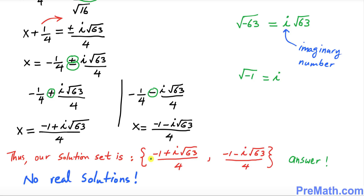So our solution set is: (negative 1 plus i times the square root of 63) over 4, and (negative 1 minus i times the square root of 63) over 4. Since these are imaginary numbers, we have no real solutions. Thanks for watching and please subscribe to my channel.